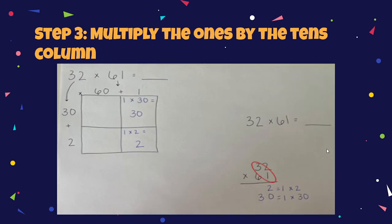Step three, multiply the ones by the tens column. 1 multiplied by 3 will give you 30. Why is it going to give you 30? Remember how we talked about that you need to carry that 0? It's very important since it is in the tens place.